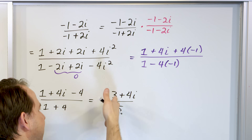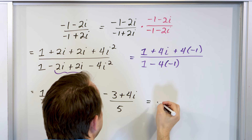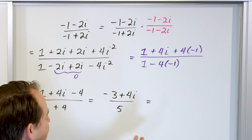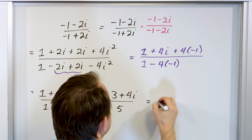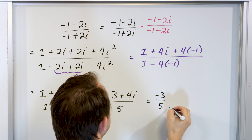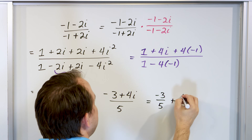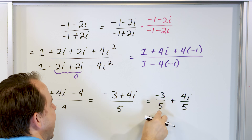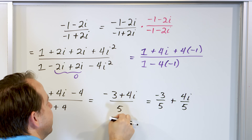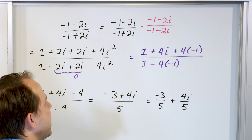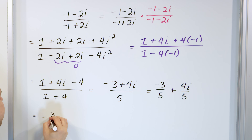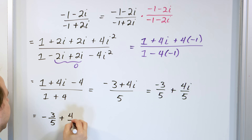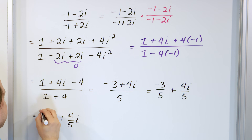One minus four is negative three, so we have negative three plus four i over five. There's nothing to factor out — three, four, and five share no common factor. So we break it into real and imaginary parts: negative three over five plus four i over five. Written cleanly: negative three-fifths plus four-fifths times i.